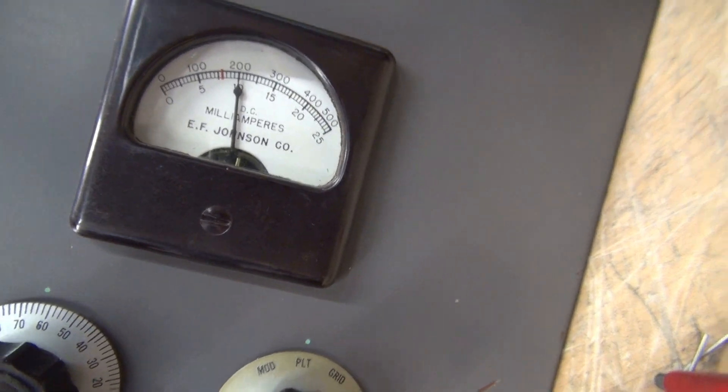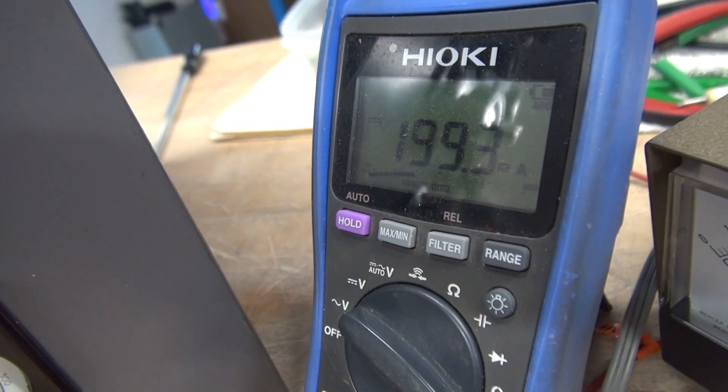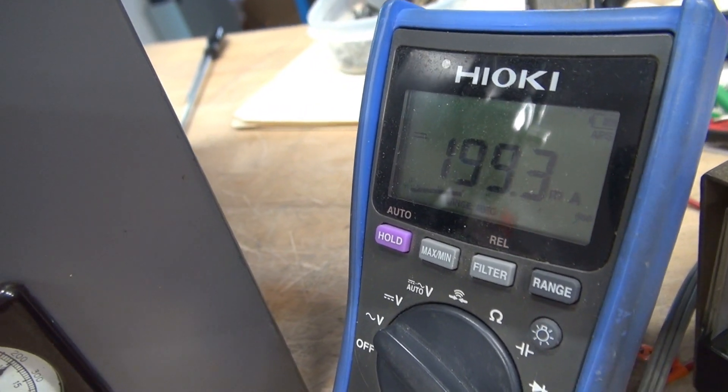I compare that to my milliamp meter. Here we've got 99. Let's take it up to 200. So there is about 200 milliamps and we got 199. So shunt 1 for plate appears to be in tolerance.